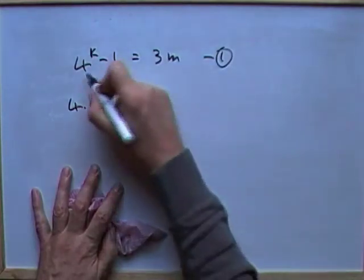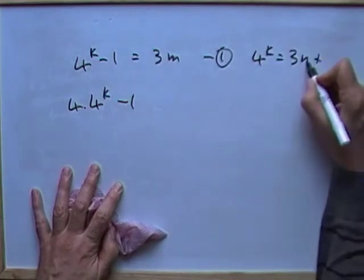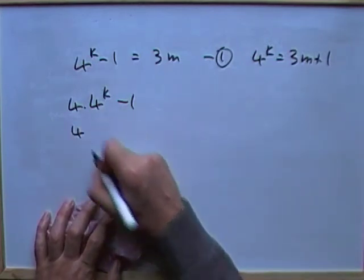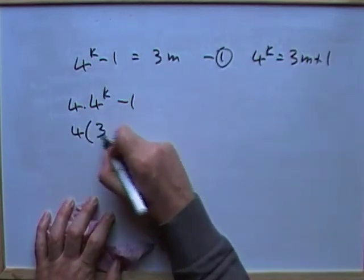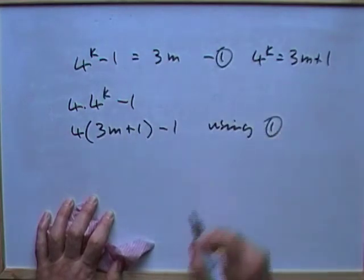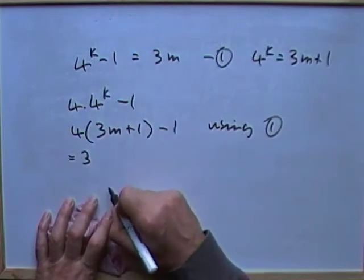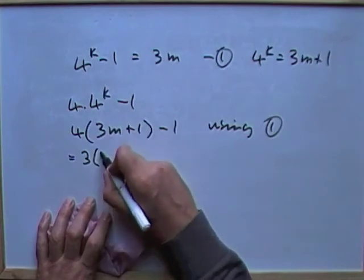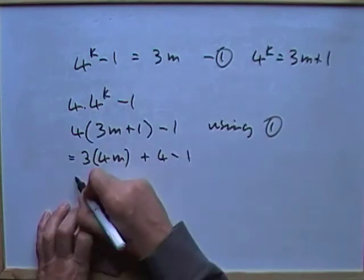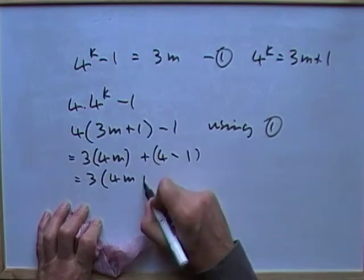Well another thing you could have done is just rearrange this one to read 4 to the k is 3m plus 1 and then substituted that into that. So I've got 4 times 3 to the m plus 1 minus 1. Still using 1, just in a slightly different way. Which gives me, as before, 3 times 4m plus the 4 minus 1, which is 3 times 4m plus 1.